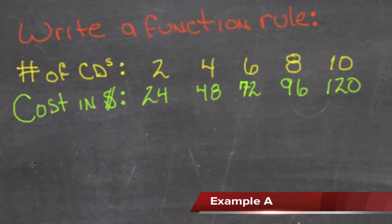Our first example is to write a function rule using the information in the table. We have a specific number of CDs, 2, 4, 6, 8, or 10 CDs, and we have a cost in dollars based on the number of CDs purchased.